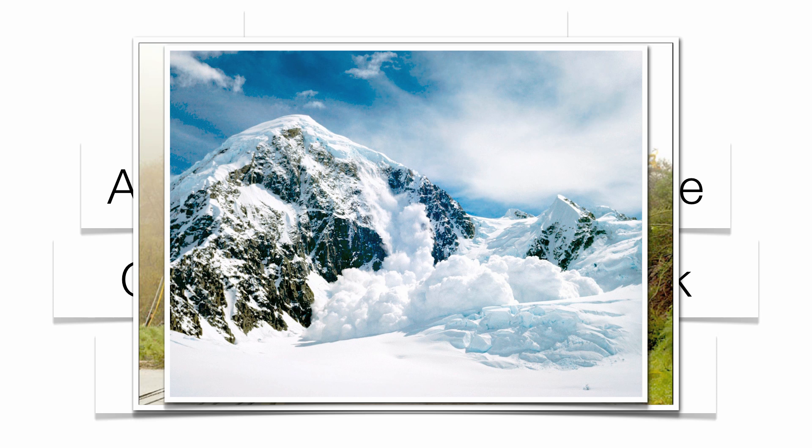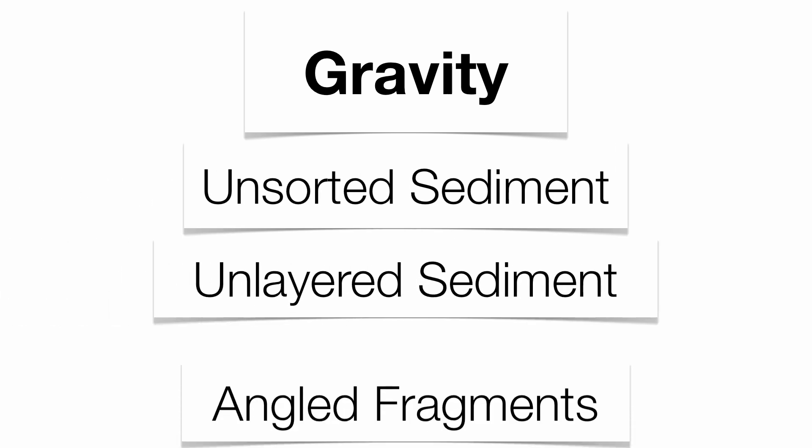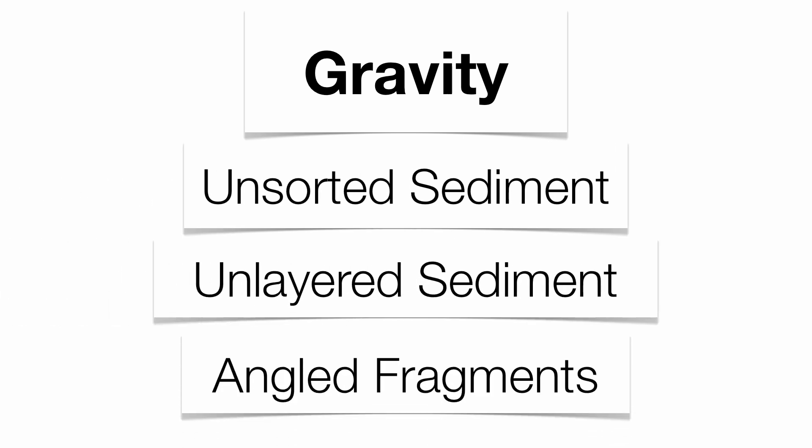Avalanches are thrown into that same category as well. Instead of rock and soil, it's snow and ice that falls downslope, all based upon the slope of the land. Remember, gravity erosion is unsorted, unlayered, and somewhat unorganized with angled fragments. So gravity is a very important feature regarding erosion.